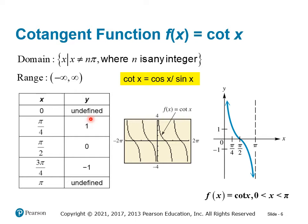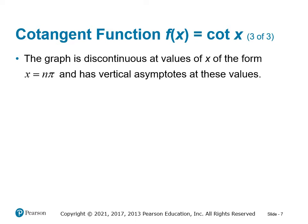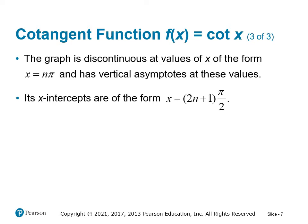Where cosine equals zero — when the numerator equals zero — cotangent will be zero, and that happens at pi over 2. Cotangent is a decreasing function, going down from left to right. The graph is discontinuous at values of x equal to n*pi, again when sine is zero, and has vertical asymptotes at all multiples of pi.